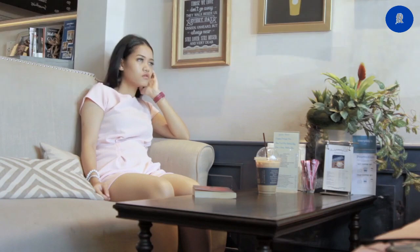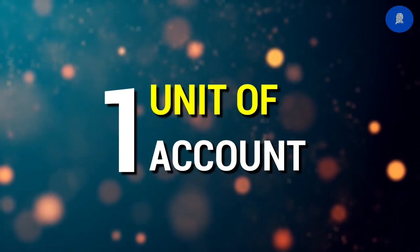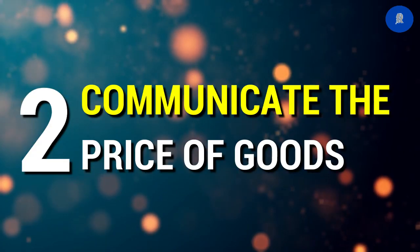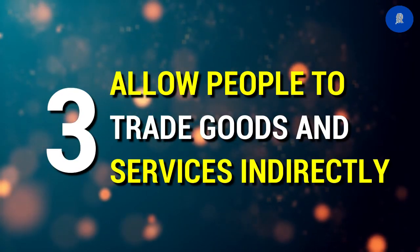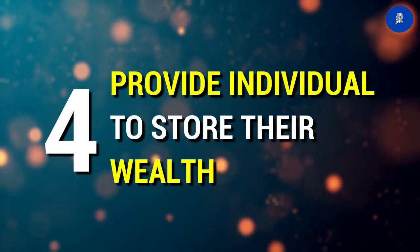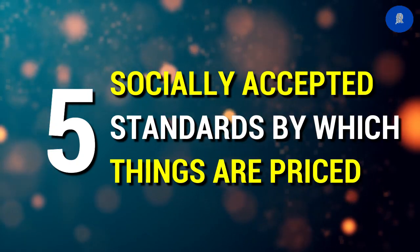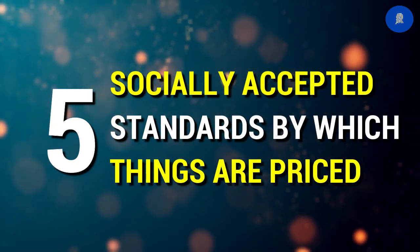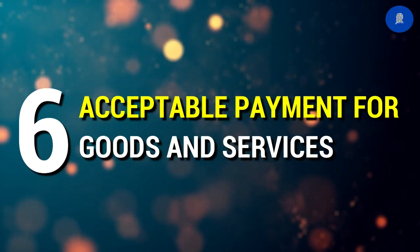What is money? There are six descriptions of money. First, unit of account. Second, communicate the price of goods. Third, allow people to trade goods and services indirectly. Fourth, provides individuals a means to store their wealth. Fifth, socially accepted standards by which things are priced. The last one: acceptable payment for goods and services.